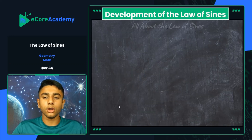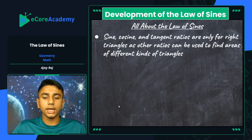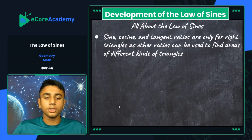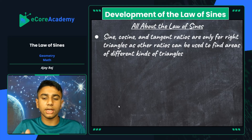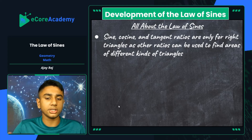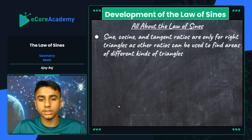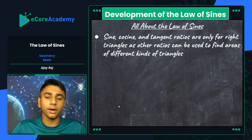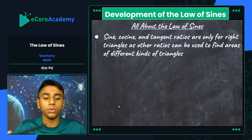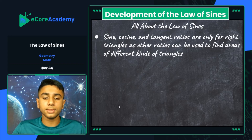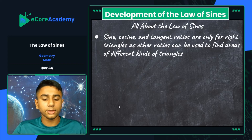Let's look at the development of the Law of Sines. Sine, cosine, and tangent ratios are only for right triangles, as other ratios can be used to find areas of different kinds of triangles. In right triangle trigonometry, sine is opposite over hypotenuse, cosine is adjacent over hypotenuse, and tangent is opposite over adjacent. These are all relative sides to your given acute angle of right triangles only. However, there are other forms of these theorems specifically for sine and cosine — the Law of Sines and the Law of Cosines.